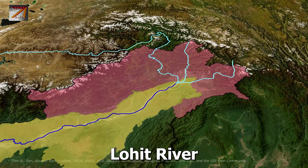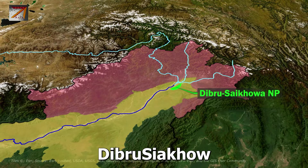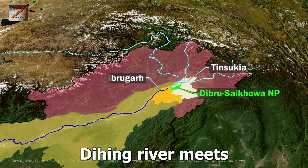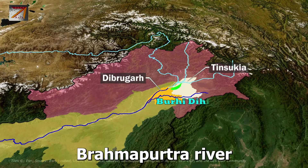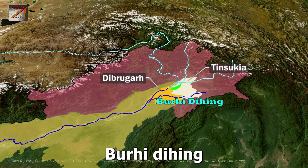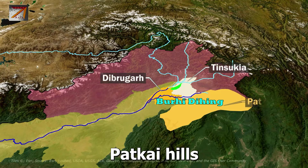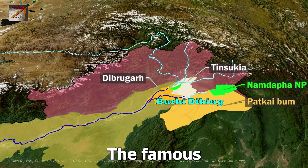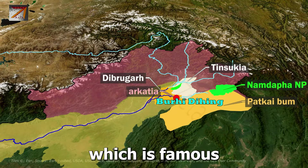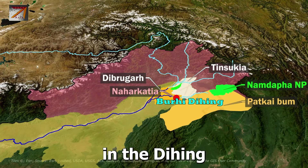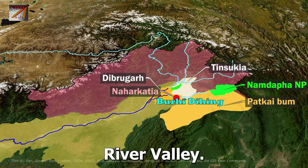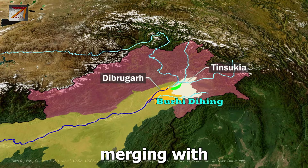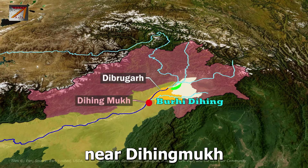Just after the confluence of Lohit with Brahmaputra, we see Dibru Saikhowa National Park in Tinsukia district of Assam. In Dibrugarh, the Dihing River, also called Buri Dihing, originates in Patkai hills and meets Brahmaputra. Its tributaries drain Namdapha National Park. The famous Naharkatia town, known for petroleum fields, is located in the Dihing river valley. The river flows through Tinsukia and Dibrugarh districts before merging with Brahmaputra near Dihingmukh.